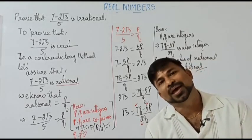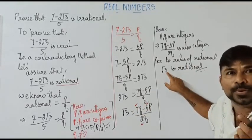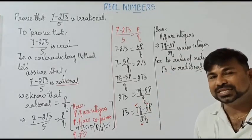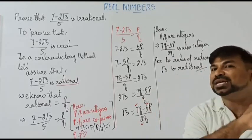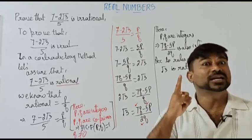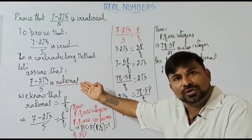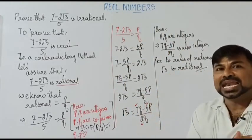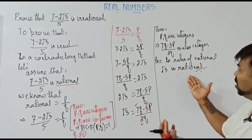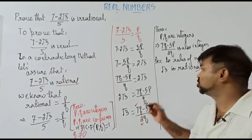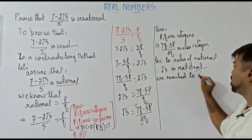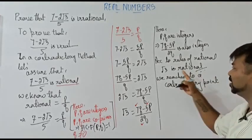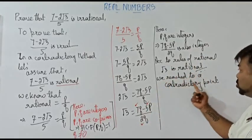But wait — √3 is rational? How can a number which is a prime under a square root be rational? It is not at all possible. The number inside is 3, which is a prime number, and the square root of a prime number can never be rational. But according to our assumption and simplification, we reached a point where we are saying √3 is rational — which is against the known facts. So we have reached a contradiction.